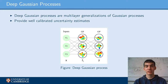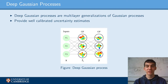Deep Gaussian processes are multi-layer generalizations of Gaussian processes. Unlike in deep neural networks, the output of each layer and the input to the next one is a probability distribution rather than an exact value. This allows deep Gaussian processes to accurately capture the uncertainty in their forward paths.